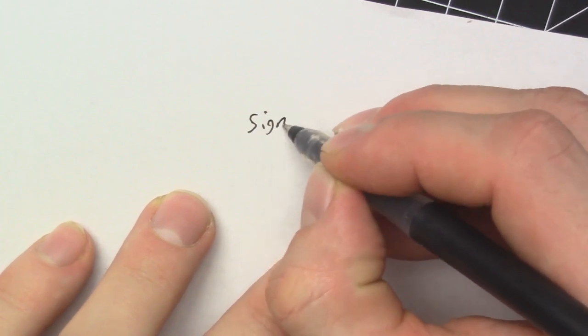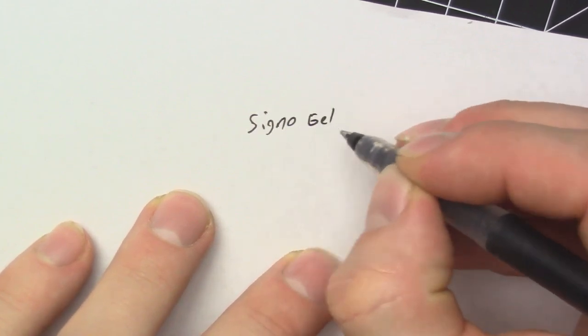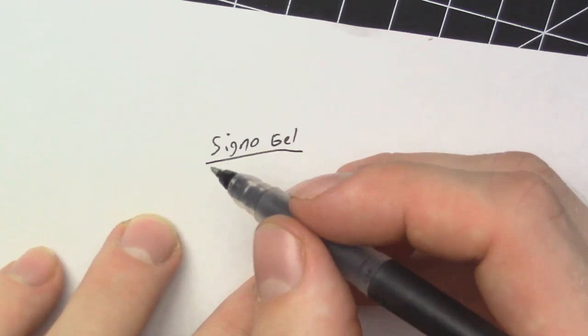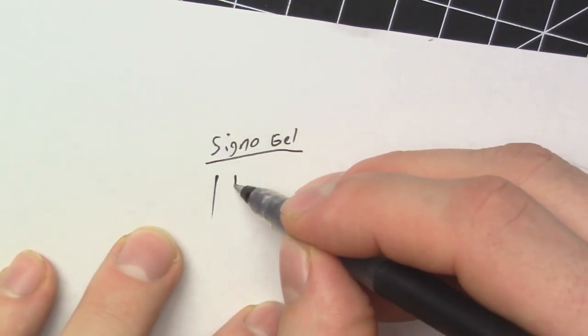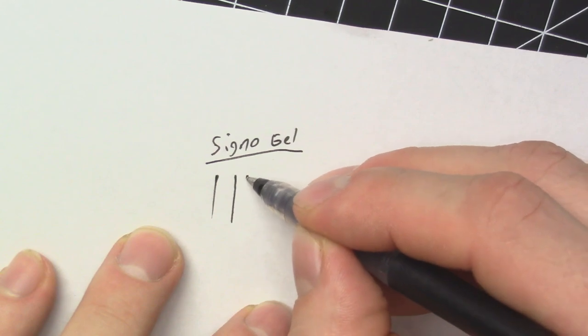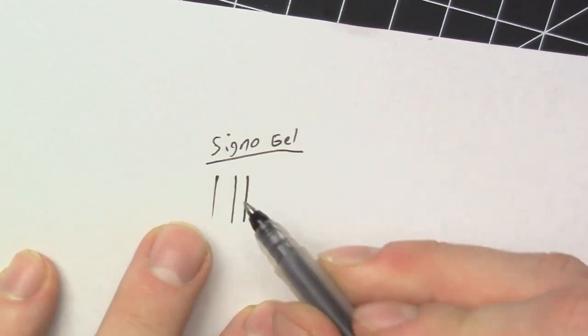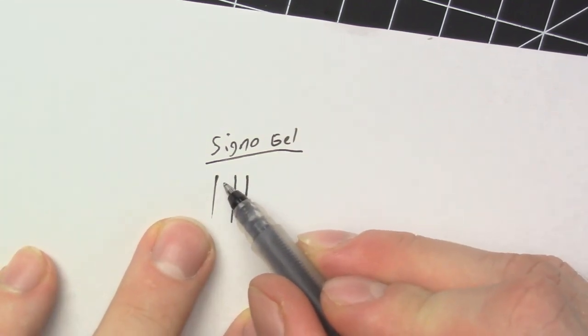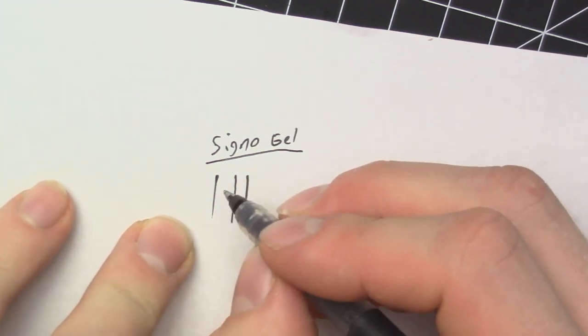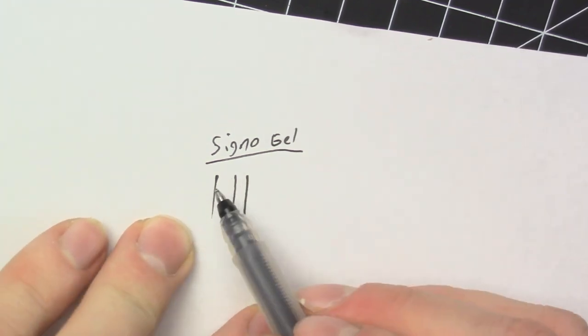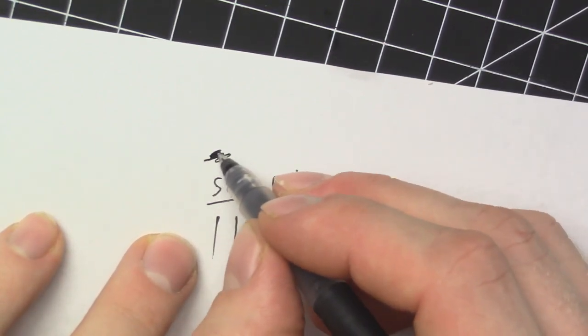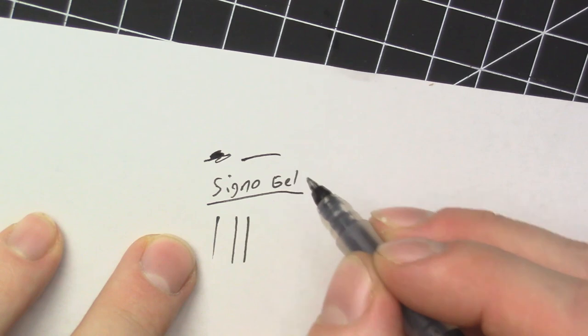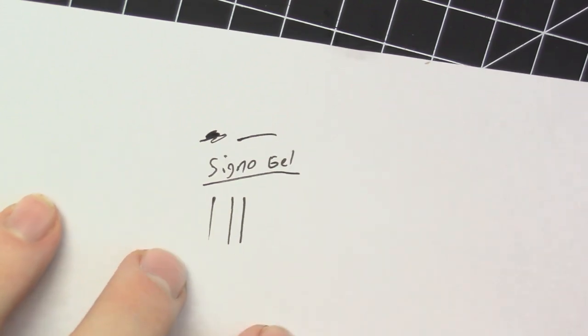So let's compare the lines. Signo Gel: fast line, medium speed, and slow. As you can see, if you've been writing something and then you go to write something again right after that, you will get a blob at the end of it. I'll show you what I mean by that. As you can see there.